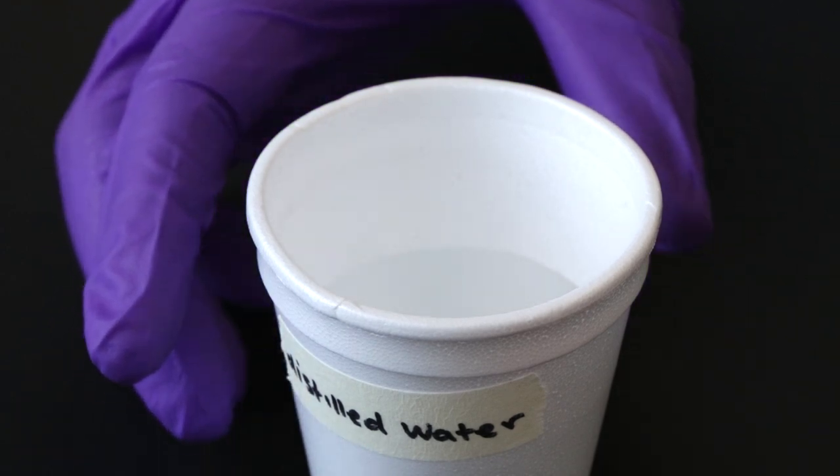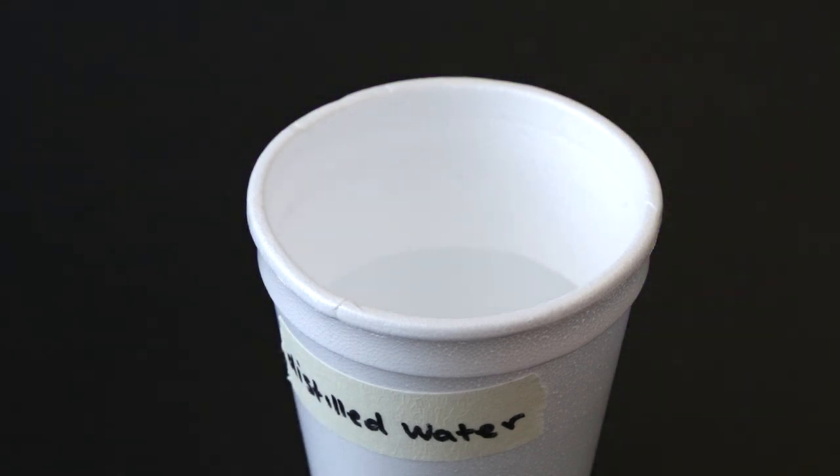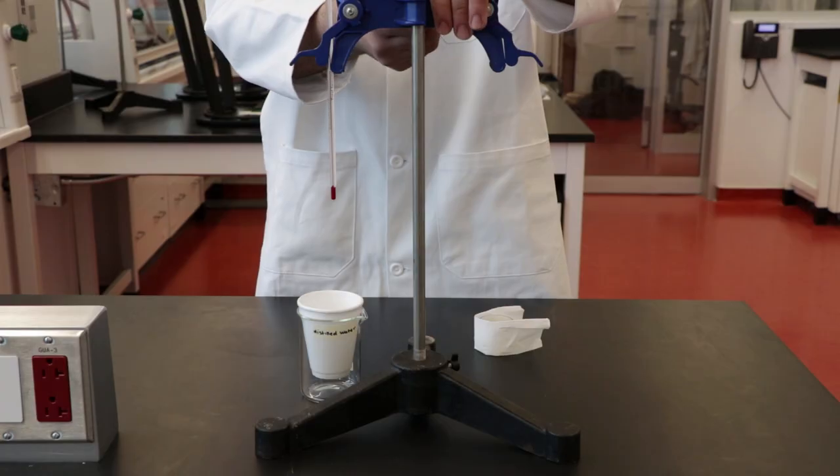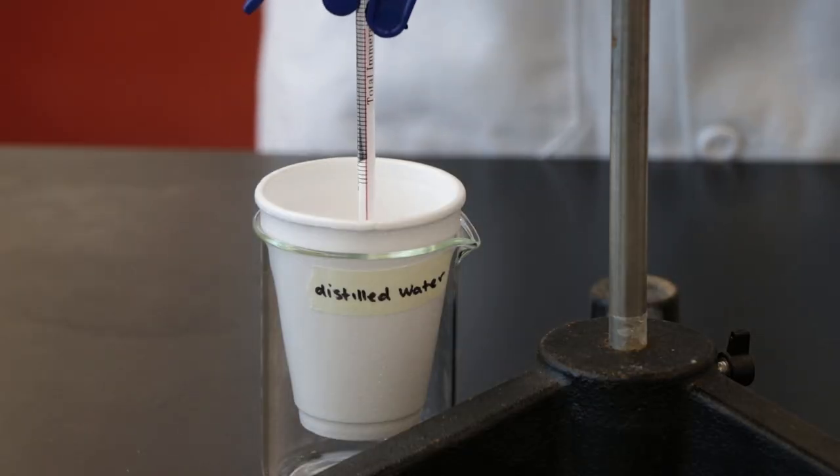Measure 100 mL of distilled water into the styrofoam cup using a graduated cylinder. Repeat the procedure from part one and measure the temperature of the distilled water for four minutes at one minute intervals.